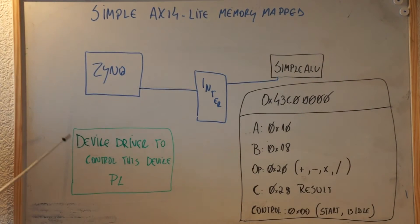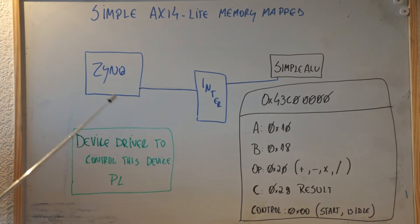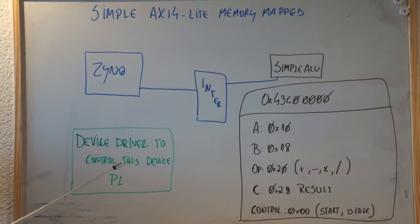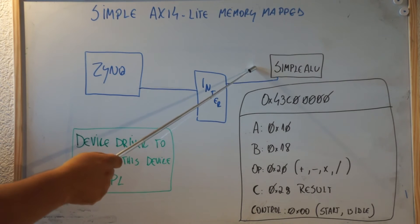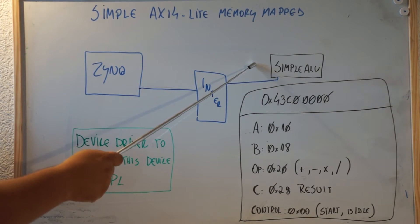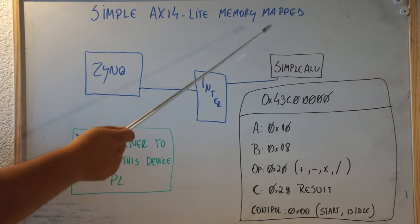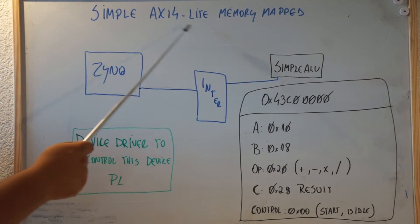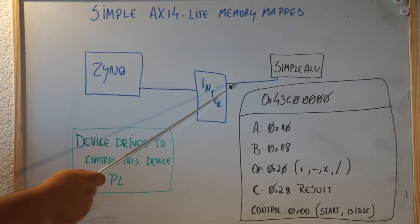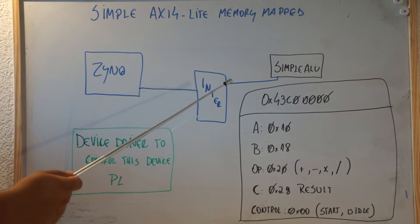So basically what we're going to see today — before we start to create device drivers, we need to create a device. And this device will be what we'll call a simple ALU. It's just a very, very simple memory-mapping IP core. When I say memory mapping, what it means is that it has an AXI-lite interface where you can send and receive data through pointers from your Zynq.